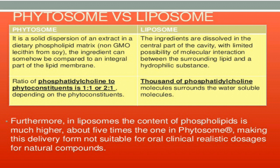Liposomes are also a novel drug delivery system, but phytosomes are a better choice for particular phytoconstituents as compared to liposomes — this is the main difference between them. Phytosomes are complex molecules, whereas liposomes are a type of vesicle formation. In phytosomes, the ratio of phosphatidylcholine to phytoconstituents is generally 1:1 or 2:1, meaning phosphatidylcholine is either similar in quantity or double. In the case of liposomes, thousands of phosphatidylcholine molecules are used to form a vesicle or cover in which the drug is incorporated in the center.